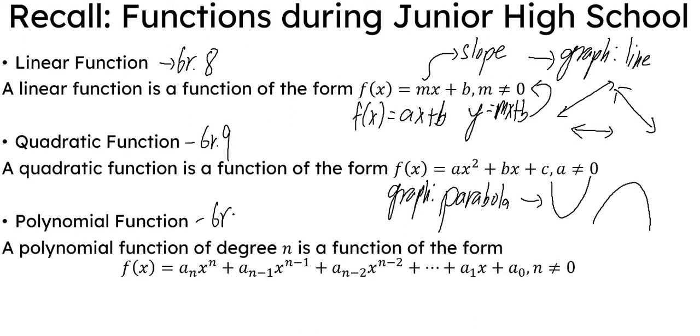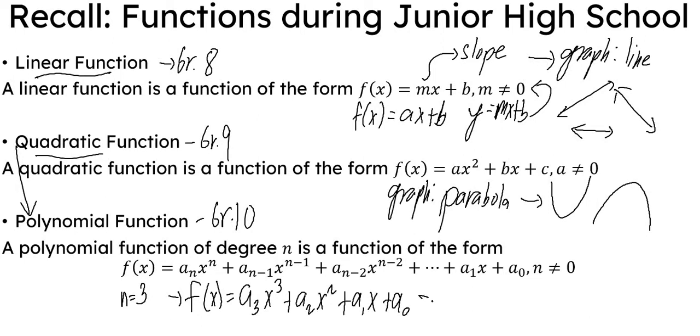And in grade 10, we extended as our linear and quadratic functions are actually part of the family of polynomial functions. And we defined polynomial functions of degree n as a function of this form, which simply means that if our n equals 3, then our function would be f(x) = a₃x³ + a₂x² + a₁x + a₀, which is specifically called the cubic function. And we can have it raised to 4, raised to 5, and so on.